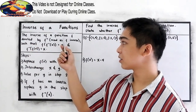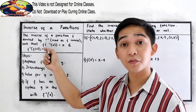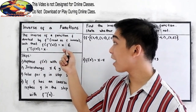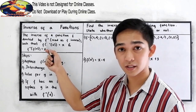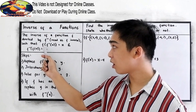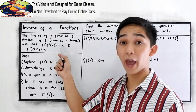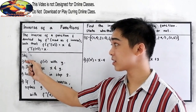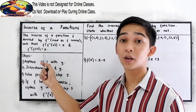The inverse of a function f, denoted by f raised to negative 1, is read as f inverse. Such that f of f inverse of x is equal to x, and f inverse of f of x is equal to x.